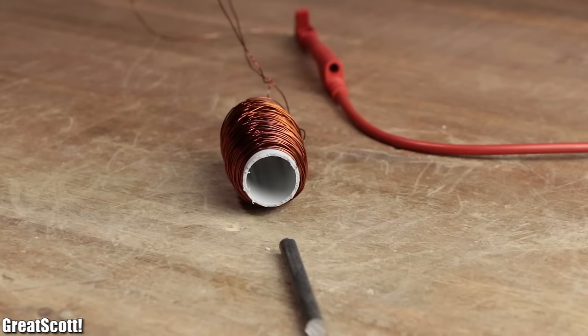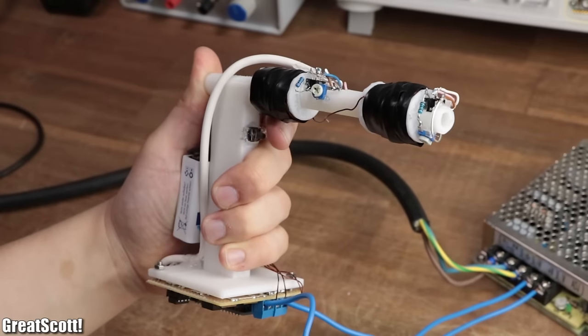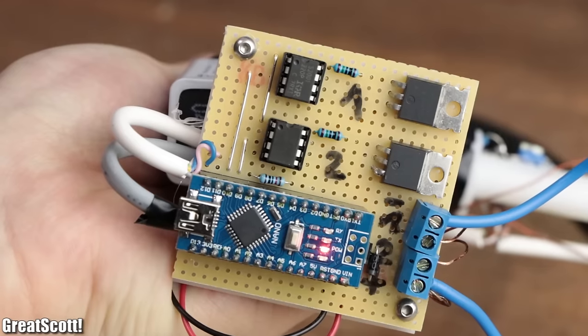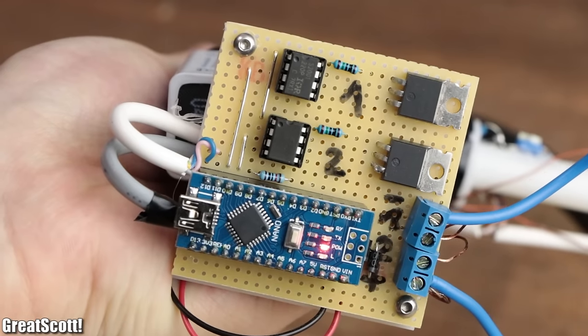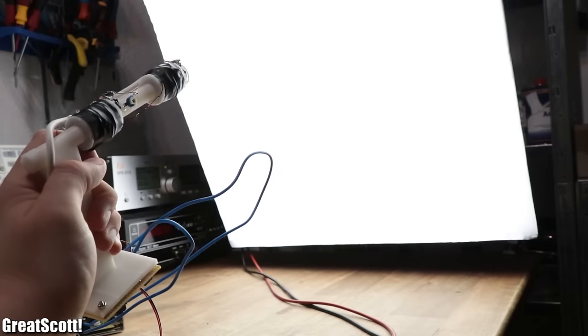This functional principle is used for coil guns, and in this video I will show you how I designed and created one of those with a two-stage coil arrangement that can shoot projectiles up to 10 meters. Let's get started.